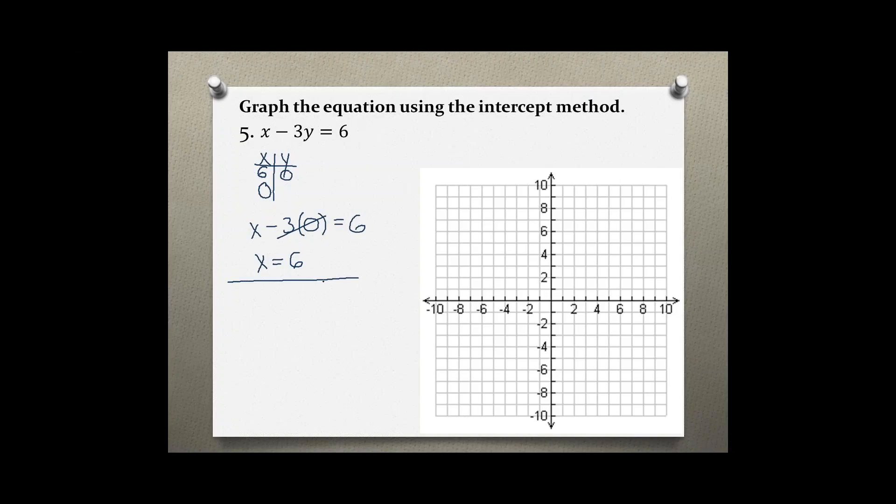To find the y intercept we have to plug in a zero for x. So 0 minus 3y equals 6. We divide both sides by negative 3.